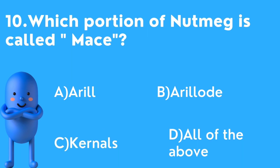Tenth question: Which portion of nutmeg is called mace? Options are A) Aryl, B) Arillode, C) Kernels, D) All of the above. The correct answer is aryl.